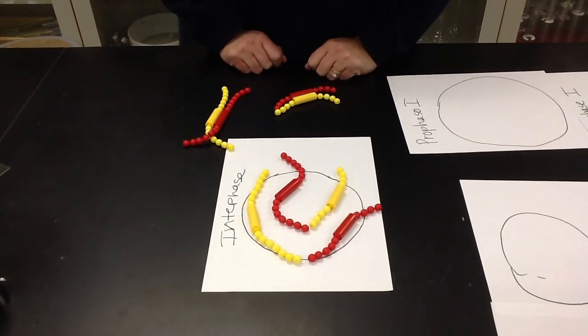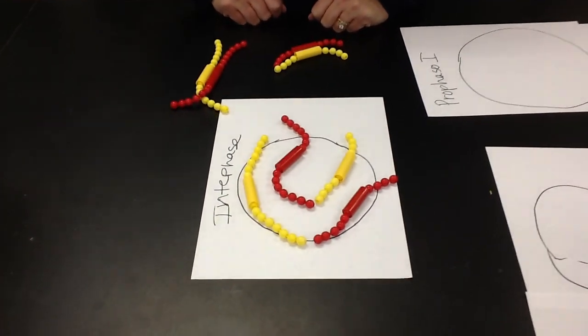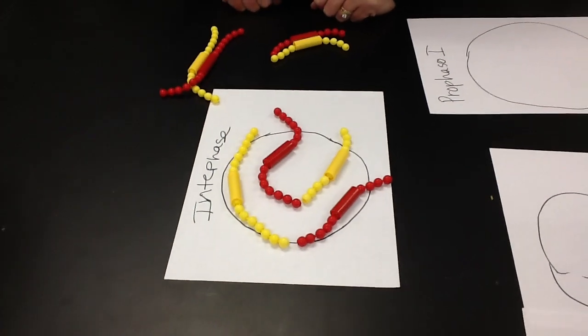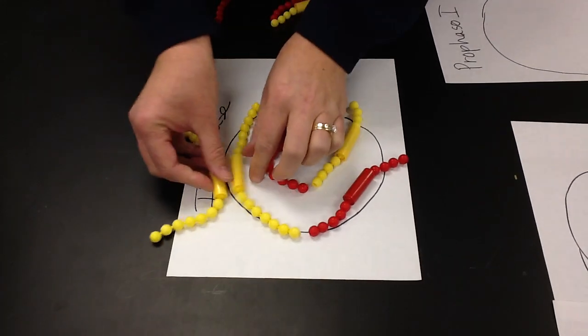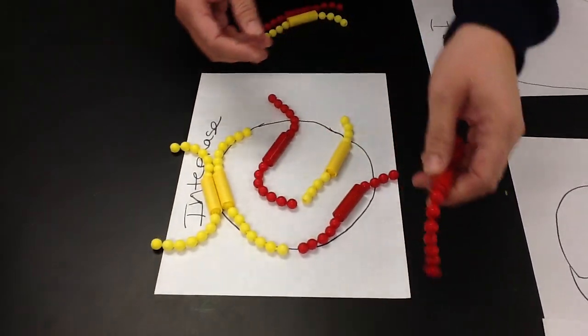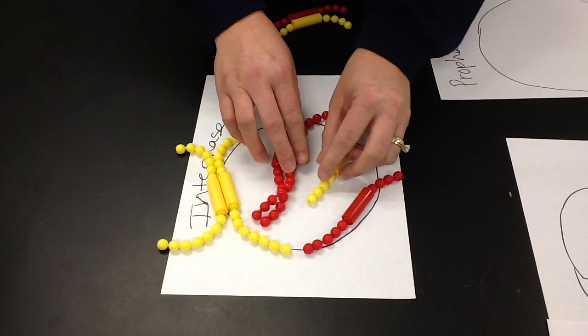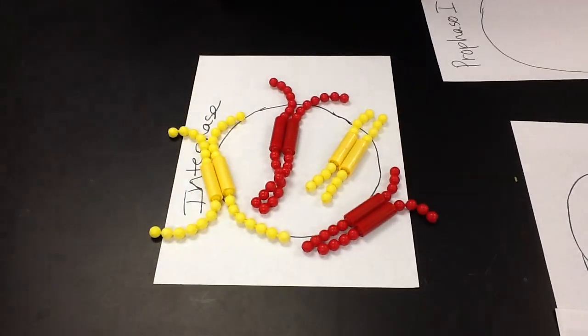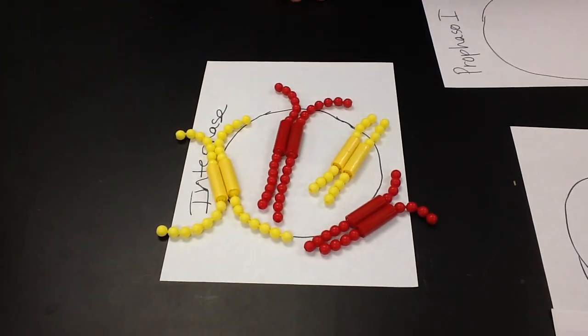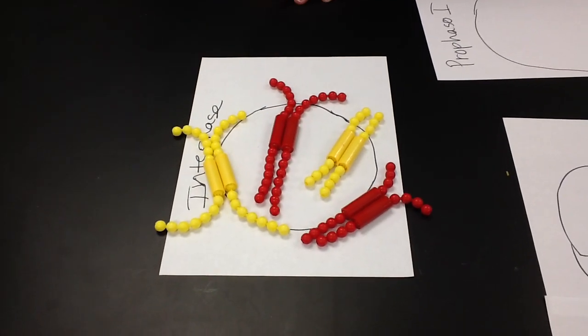And then in the S phase, as you guys all know, these chromosomes are going to duplicate or replicate. So that's what I'm doing now, I'm duplicating each one. I want to make sure they're the same size. This is what your bag looked like. You had eight chromosomes to start with.